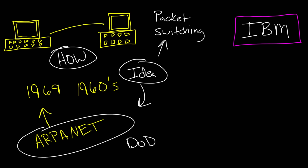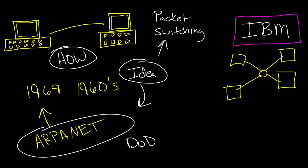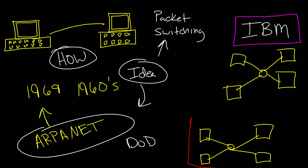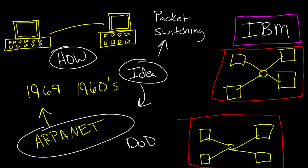So companies like IBM were like, heck yeah, we have computers — let's design our own network. And they did. It was proprietary, meaning it only worked with their stuff, which is fine if you have an IBM computer. But there weren't just IBM. There were other companies, and guess what they did — they also designed their own networks. And because these networks were proprietary, they couldn't really play well with others, meaning these networks could not communicate. Couldn't have this device talk with this device.